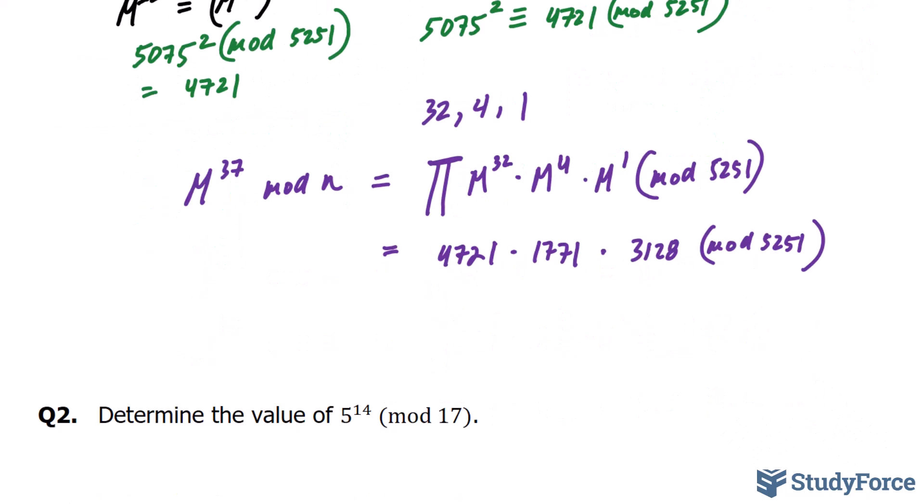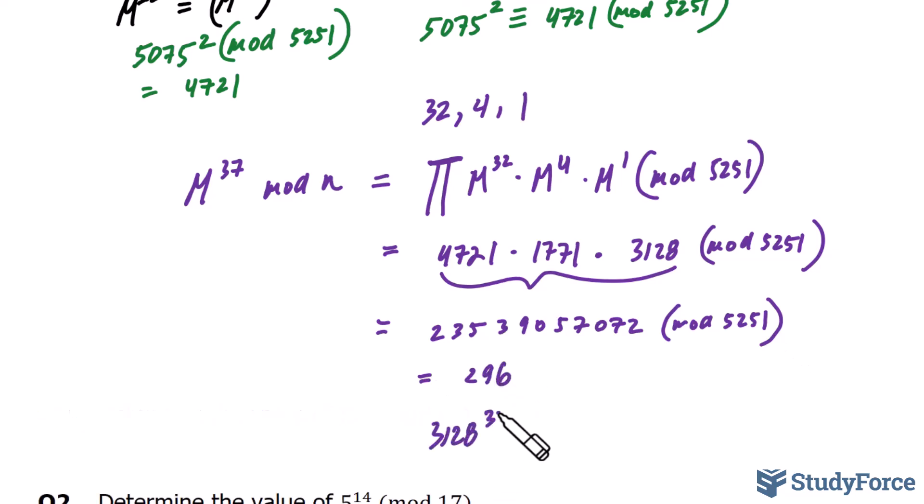So by multiplying these three numbers out, yes, we will get a really large product, but it's still a lot smaller than the one that we started with, which would have amounted to 130 digits. And so it turns out that if we were to multiply these three out, we get the number 23539057072 mod 5251. And again, this is a lot more manageable than 130 digits. It turns out that if we find the modulo of this number with 5251, we get a remainder of 296. So to summarize our findings, we can say 3128^37 is congruent to 296 mod 5251. And so that's our answer.